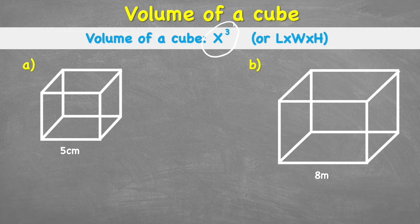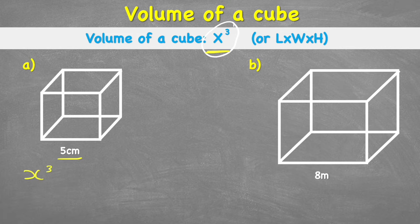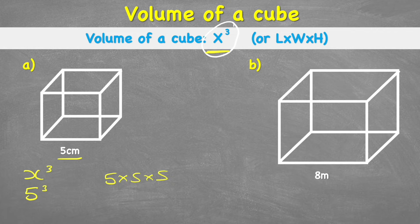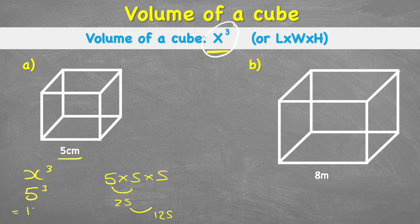Let's have a look at example one. We can see we have a length of five centimetres. So if we're following this formula, we would have X cubed, or therefore five cubed. And five cubed is essentially saying five times five times five. Five times five is 25, times five is 125. So five cubed equals 125 centimetres cubed.